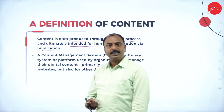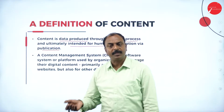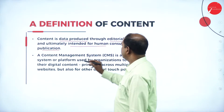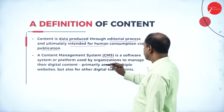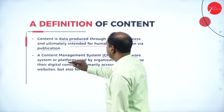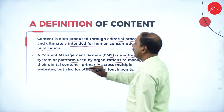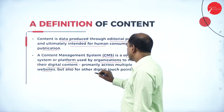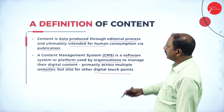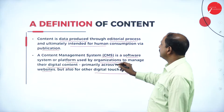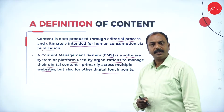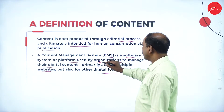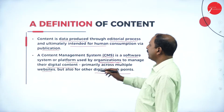How can we get the information? The information will be available to users after or through publication. Now a CMS — a content management system — is a software. It is a software system or a platform used by organizations to manage their digital content, primarily across multiple websites, and also for other digital touch points. Content management system is a software or a platform used by any company or organization to manage their digital content.